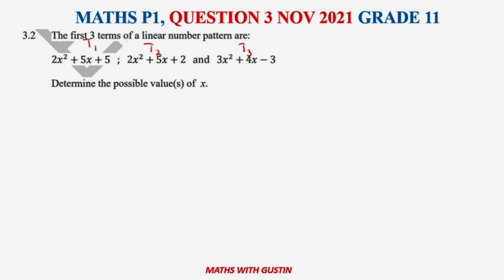We know that if we're given a linear pattern, in order to find the common difference, T2 - T1 should be equal to T3 - T2. Let's substitute: T2 is 2x²+5x+2 minus T1 which is 2x²+5x+5, equals 3x²+4x-3 minus 2x²+5x+2.